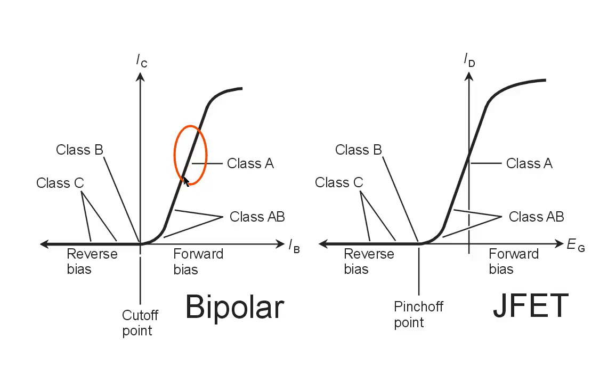In the class A case, it's always going to remain within that straight-line portion of the curve, so that the output waveform will always be a faithful reproduction of the input waveform, just bigger, hopefully, if we have an amplifier.